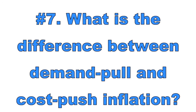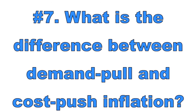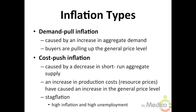Number 7: What is the difference between demand-pull and cost-push inflation? Demand-pull inflation is caused by an increase in aggregate demand — buyers are pulling up the general price level of goods and services. Cost-push inflation is caused by a decrease in short-run aggregate supply, meaning an increase in production costs or resource prices has raised the general price level. Cost-push inflation is less desirable because it is accompanied by a decrease in output and an increase in unemployment. When inflation and unemployment increase at the same time, the economy experiences stagflation.